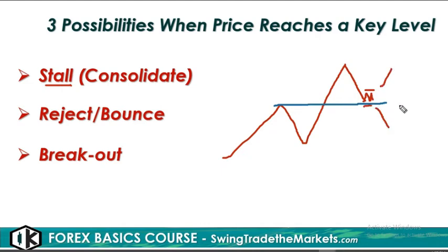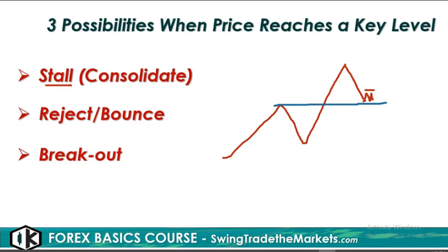The signs of consolidation are that the candlesticks are small, and price is bouncing without any buying or selling pressure — in this case, buying pressure. Price moves sideways with narrow movement. The second possibility is it might reject or bounce. There are instances when price aggressively bounces or rejects at that level. The third possibility is a breakout — price could break down instead of going up.